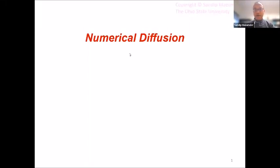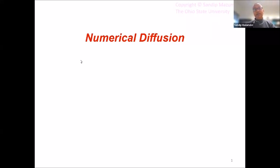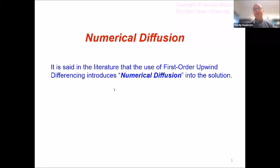Hello, everyone. Today I want to talk about a very commonly encountered topic in computational fluid dynamics, and that is numerical diffusion. One of the most common or popular schemes used for the treatment of advection in CFD is the so-called first-order upwind differencing scheme. It's almost the default scheme used in most codes, and associated with that is what's called numerical diffusion. In the literature, you will often see a statement that the use of first-order upwind differencing introduces numerical diffusion into the solution. So this video talks about what that actually means.